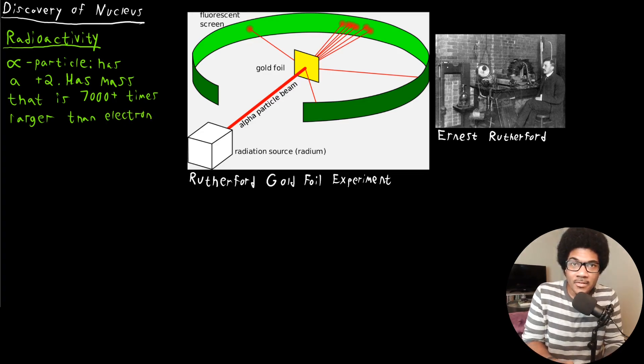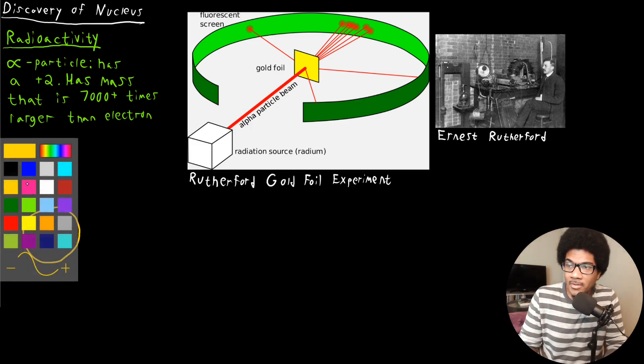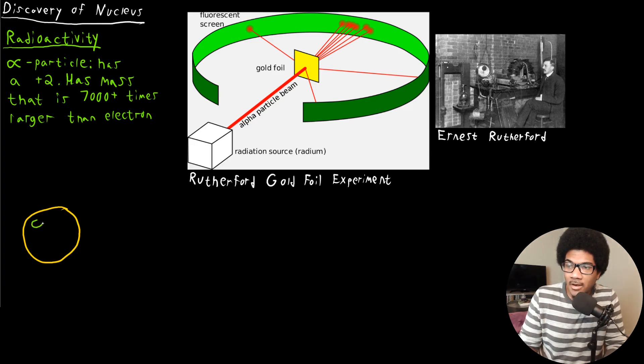So we have these radioactive particles, these alpha particles that have a significant positive charge and that have a large mass. They're 7,000 times larger than any electrons. So this is all you really need to understand from radioactivity in order to understand the experiment that led to the discovery of the nucleus. So now let's review that plum pudding model and talk about what the general idea was behind this experiment. So again, drawing out this plum pudding model, we have an atom that's all positive charge. And we have these little negatively charged particles that are embedded in it.